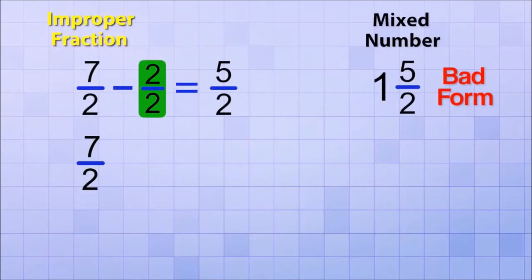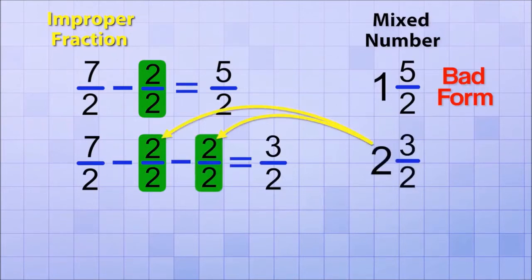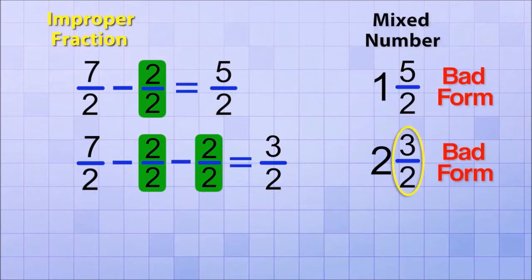So let's try again, but this time let's subtract out two whole fractions. 7 over 2 minus 2 over 2 minus 2 over 2 equals 3 over 2. That means we could write 7 over 2 as the mixed number 2 and 3 over 2 since we subtracted out two whole fractions and had 3 over 2 left over. But that's still bad form because the fraction part is still improper. We could have subtracted out another whole fraction.